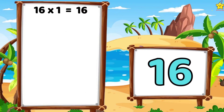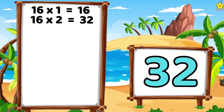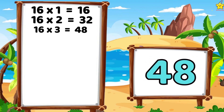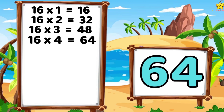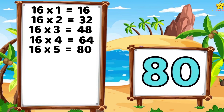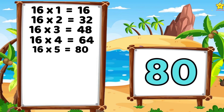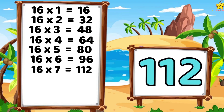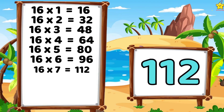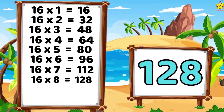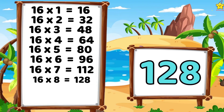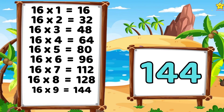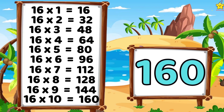16 ones are 16. 16 twos are 32. 16 threes are 48. 16 fours are 64. 16 fives are 80. 16 sixes are 96. 16 sevens are 112. 16 eights are 128. 16 nines are 144. 16 tens are 160.